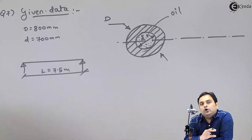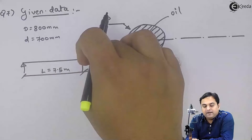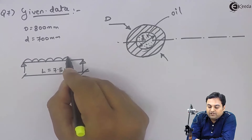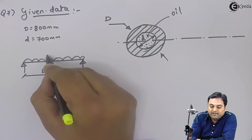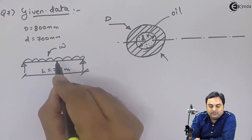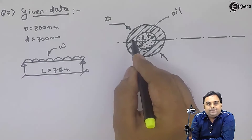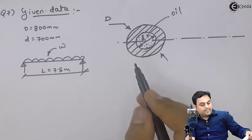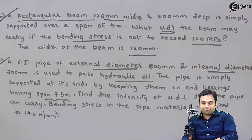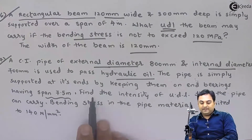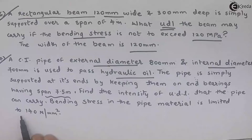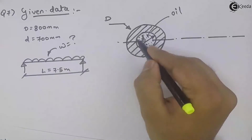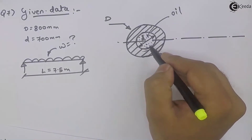The oil's weight acts on the pipe as a UDL — that is, the weight of the oil inside the pipe is taken as a uniformly distributed load on a simply supported beam. We need to find the intensity of this UDL that the pipe can carry over a 7.5 meter span.